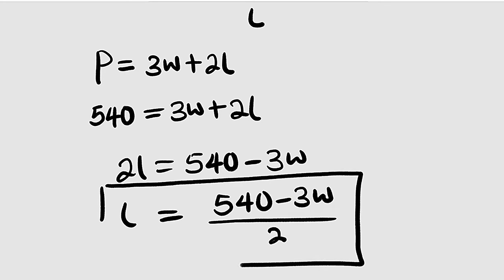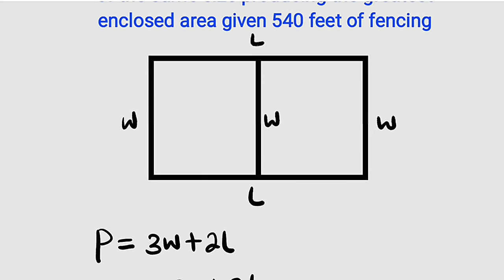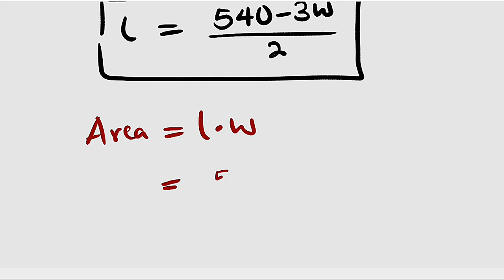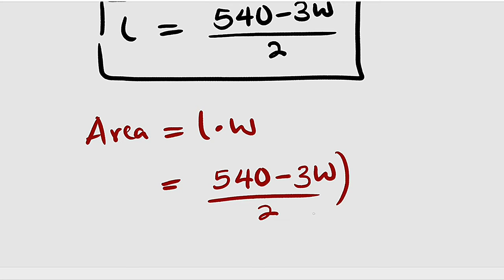This is a very important equation. Now what about the area? Let's find the area of this rectangle by multiplying length by width. So the area is equal to length multiplied by width, but l is (540 minus 3w) divided by 2, so this is equal to (540 minus 3w) divided by 2, then multiplied by w.